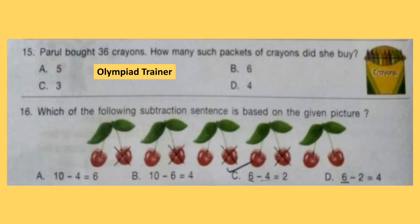Question 15. Parul bought 36 crayons. How many such packets of crayons did she buy? Count the number of crayons in the given packet — it is 9 crayons. So 9 times 4 equals 36, meaning 4 packets. Option D is the answer.